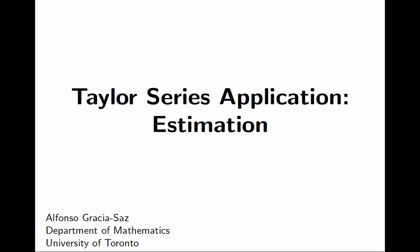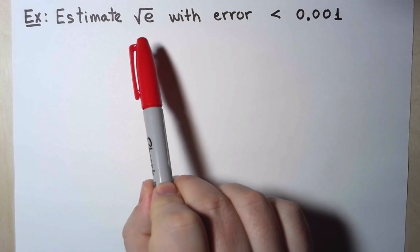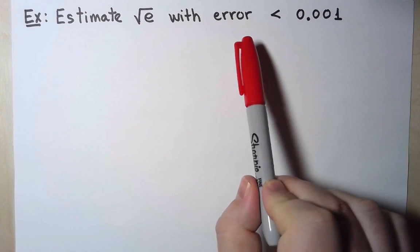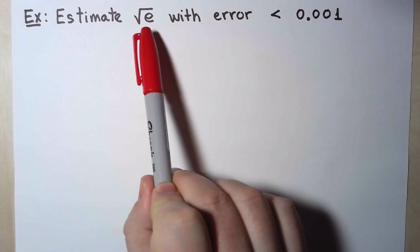In this video, I will illustrate with an example how to use them for this purpose. Here is the example. I want to estimate the value of root e, which is a number, with an error smaller than 0.001. So I want to get the first few digits of this number.